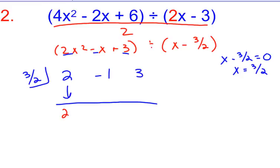So I bring my 2 down. 2 times 3/2 is 3. -1 plus 3 is 2. 2 times 3/2 is still 3. And then 3 plus 3 is 6. So that's my remainder. Remember, I bring it down 1 degree. So this is my x, and this is my constant. So my answer is 2x + 2.